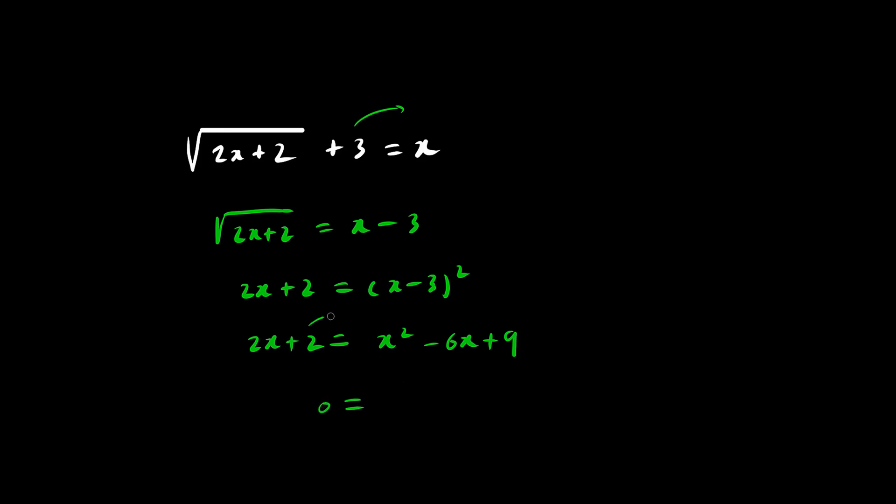Let's throw everything to the right. We have x squared minus 8x plus 9 minus 2 is positive 7. Now we try to factor. What times what is 7? 7 and 1.